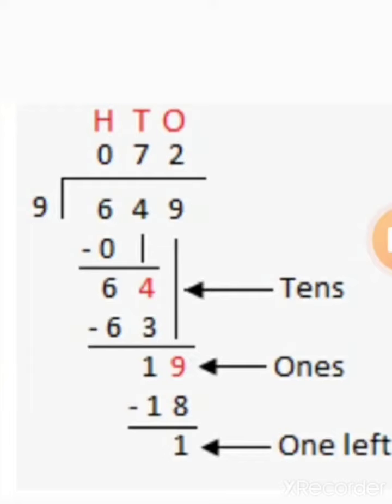And 1 is less than 9, so 1 is remainder here and 72 is quotient. In this way you will solve division questions. Thank you.